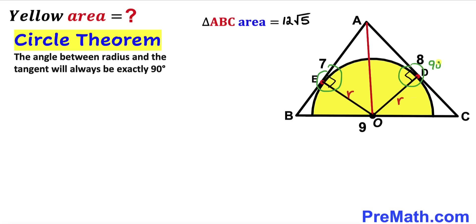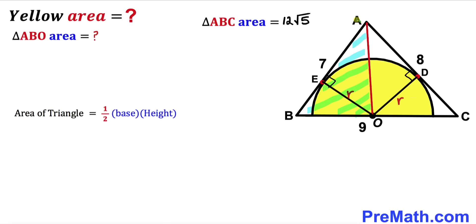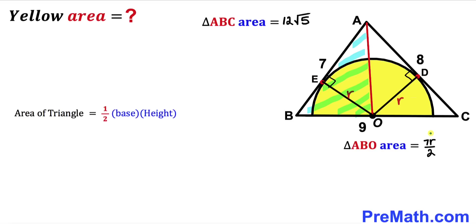Now let's calculate the area of triangle ABO using Area = ½ × base × height. The base of triangle ABO is AB = 7, and the height is the radius r. So the area of triangle ABO = ½ × 7 × r = 7r/2.